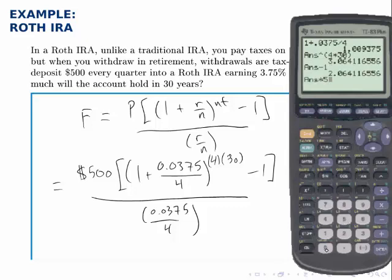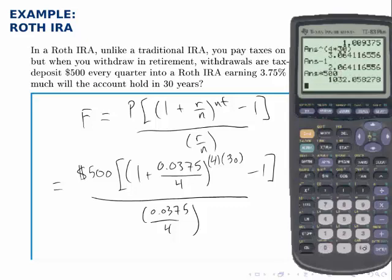Then multiply by 500. And that's the entire numerator. And then divide that numerator by 0.0375 divided by 4. And we can get a final answer of $110,086.